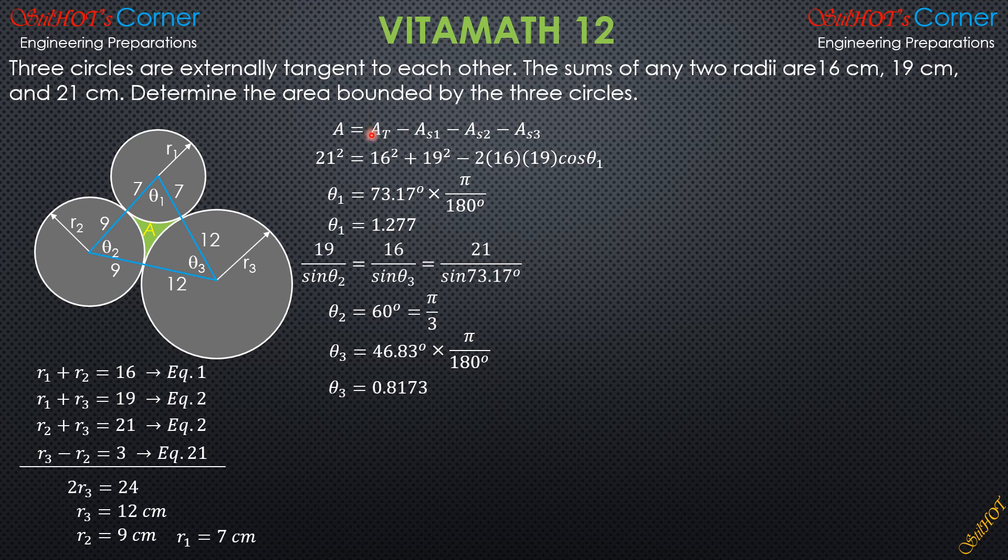We then substitute into the formula. Remember, the area of triangle is one half product of adjacent sides, which are 16 and 19, times sine of theta 1. So one half of 16 times 19 sine of theta 1—that's the area of this blue triangle—then minus area of sector 1, which is one half radius squared, one half 7 squared times theta 1 in radians, which is 1.277. One half of 7 squared times 1.277, minus this sector here, one half of 9 squared times theta 2, which is pi over 3 radians.